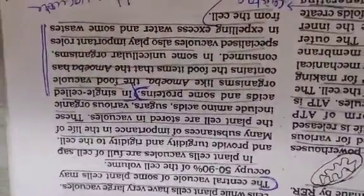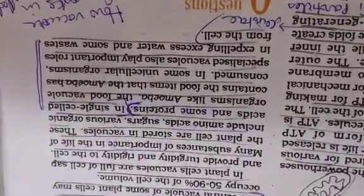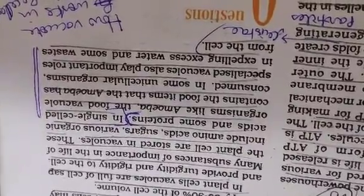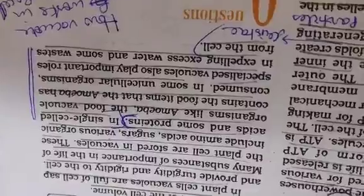All these organelles can be asked as a short note, or sometimes only structure or only function is asked. So prepare this section very well. With that, your chapter is over. For this chapter, we have only written the scientist's name and contribution, and two blue questions were given in the beginning.